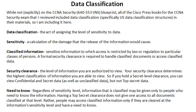After data has been classified and set up into a data classification structure, you have to determine who's going to have access to it — that's what a security clearance is. A security clearance is a level of information that you are authorized to view, and it determines the highest classification of information you're able to access. This is analogous to the Cisco privilege level.